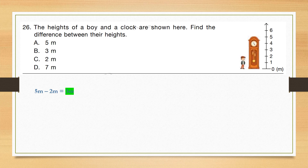Question number 26: The height of a boy and a clock are shown here. Find the difference between their heights. The height of the clock is 5 meters and the height of the boy is 2 meters. So 5 minus 2 equals 3 meters. Correct answer is option B, 3 meters.